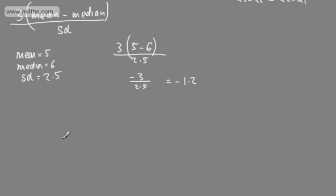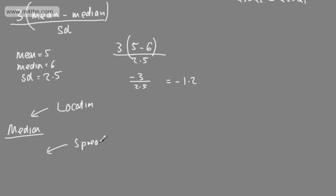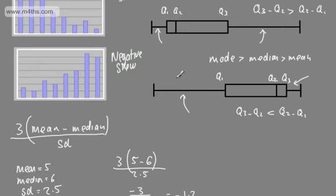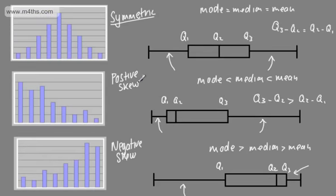We may also be asked which method of finding a measure of location and spread we would use if the data was skewed. In an exam, if asked for a measure of location, you have the choice of mode, median, and mean — but we would choose the median, as it is less affected by the skewness of data. If asked for a measure of spread, we would choose the interquartile range, as the IQR is also less affected by skewness.